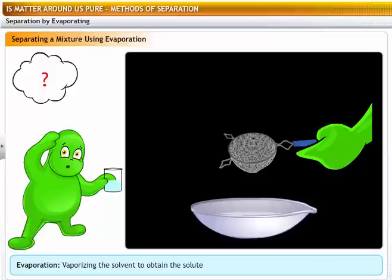You can separate salt from a solution by evaporating the water from the solution. Evaporation is the process in which a dissolved solid substance is obtained from a solution by allowing the solvent to vaporize. Let's take a look at this process through a demonstration.